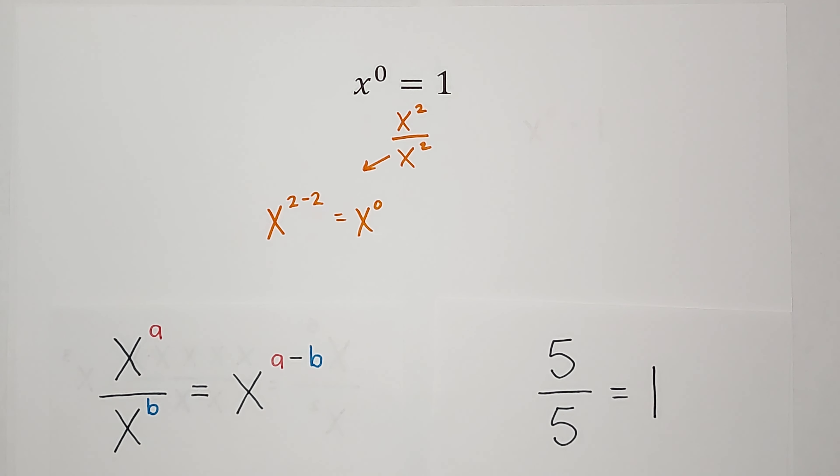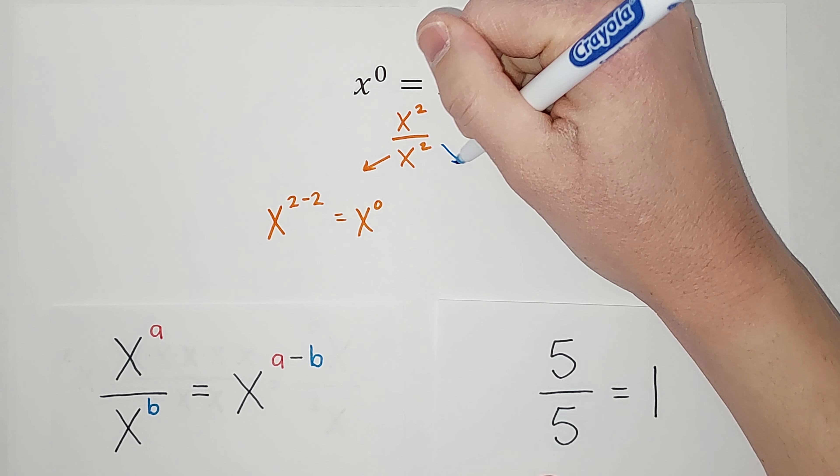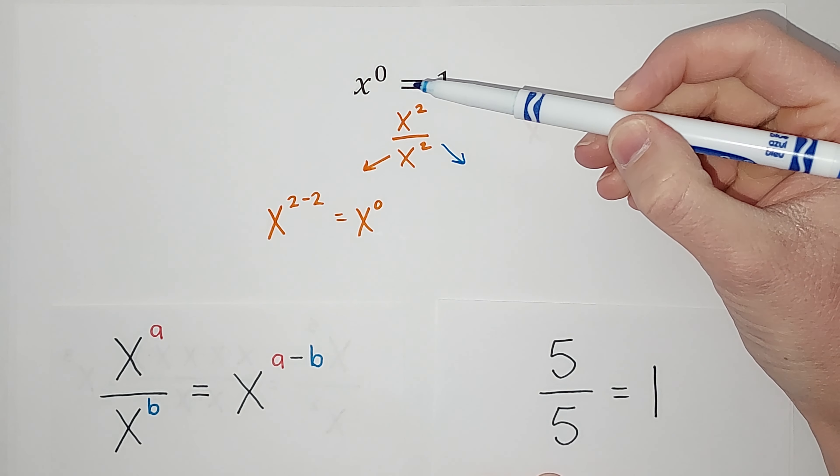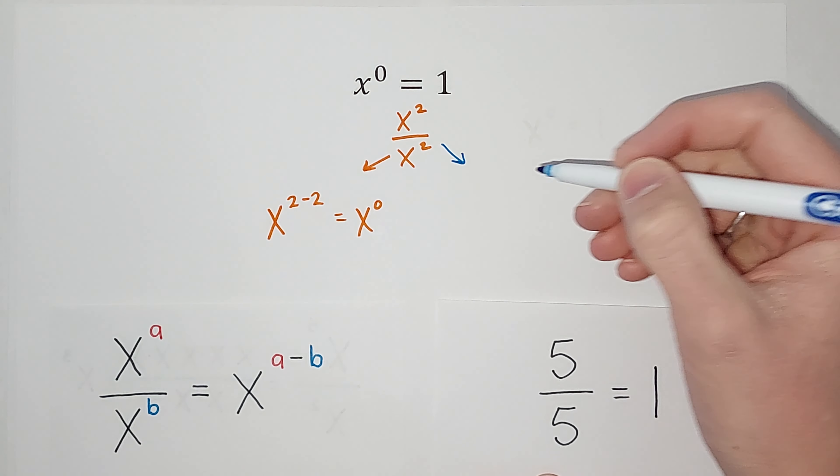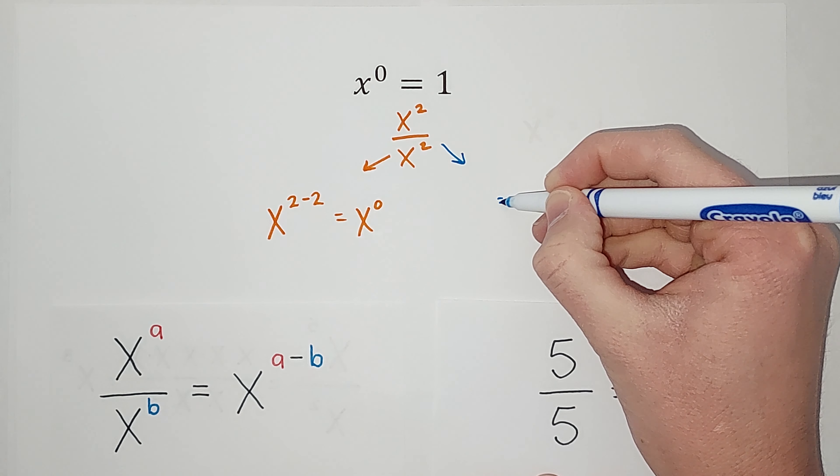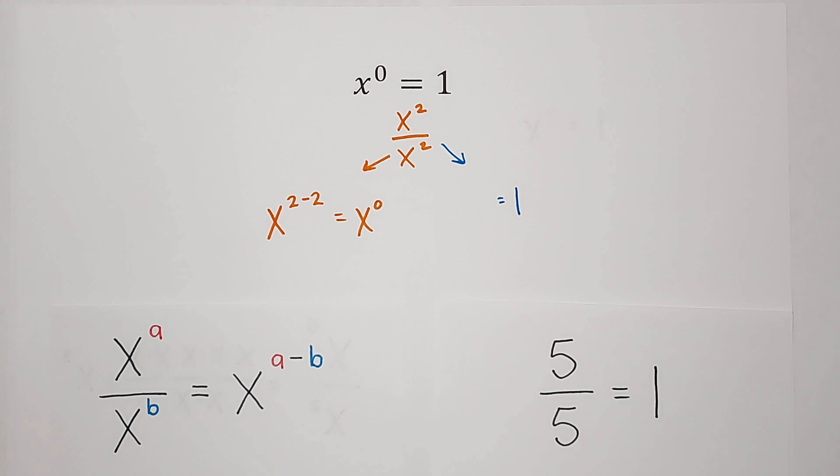Now if I look at it another way, this way - are you seeing where I'm going? Where I have something over itself, x squared over x squared, that equals one.